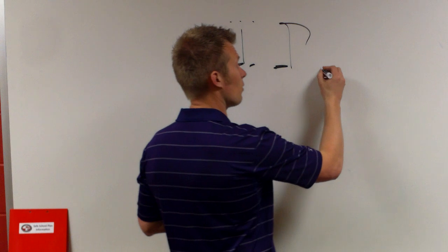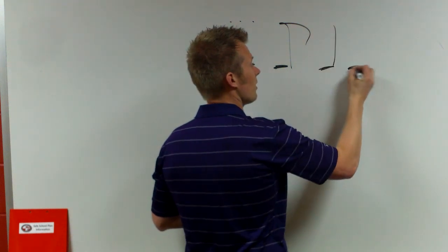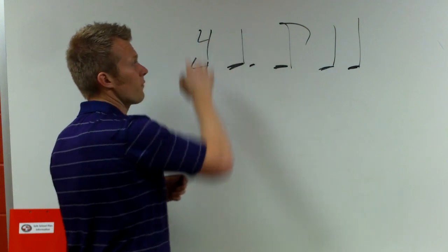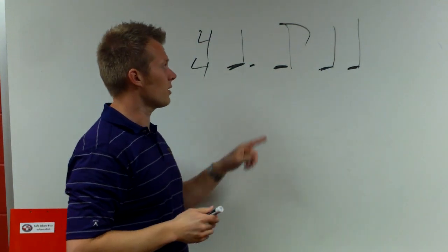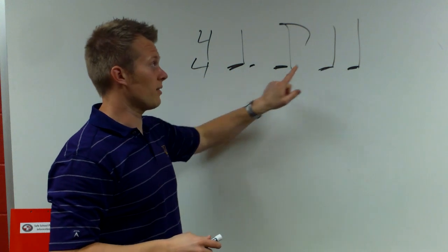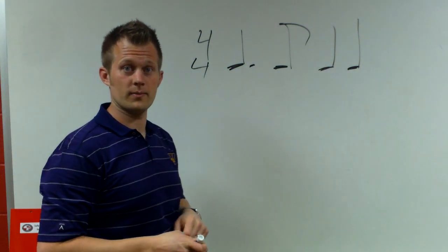So let's put this in context of a full measure. Say we have four four measure. Okay? So we have four beats in each measure. We have this rhythm right here. This will be counted. One and three, four.